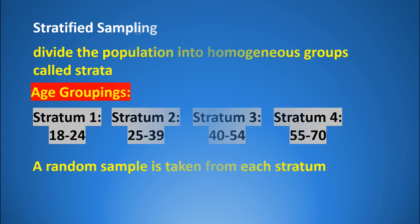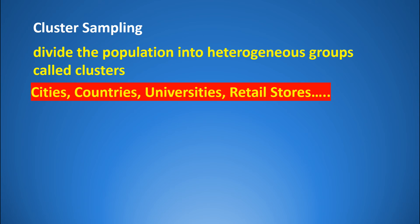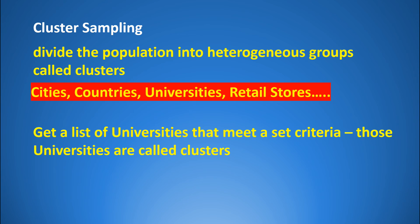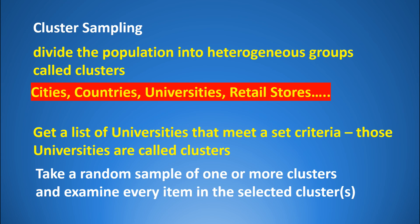Another probability method is cluster sampling. With a cluster sample, we divide the population into heterogeneous groups called clusters — naturally occurring groups such as cities, countries, universities, or retail stores. For example, if our population is commuter universities with student populations of 15,000 to 20,000, we get a list of all qualifying universities as clusters, then take a random sample of one or more clusters and study all items within each selected cluster.